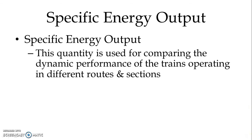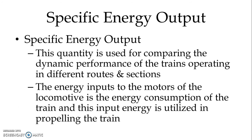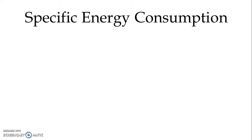This quantity is used for comparing the dynamic performance of trains operating in different routes and sections. The energy input to the motors of the locomotive is the energy consumption of the train, and this input energy is utilized in propelling the train. Actual energy requirement is more in case of lighting, braking, and the energy required for propelling the train.